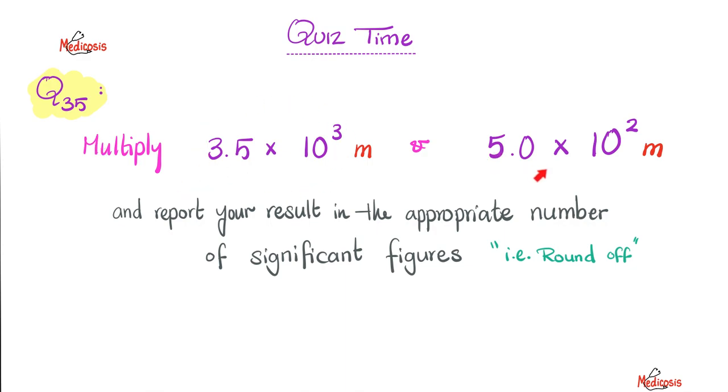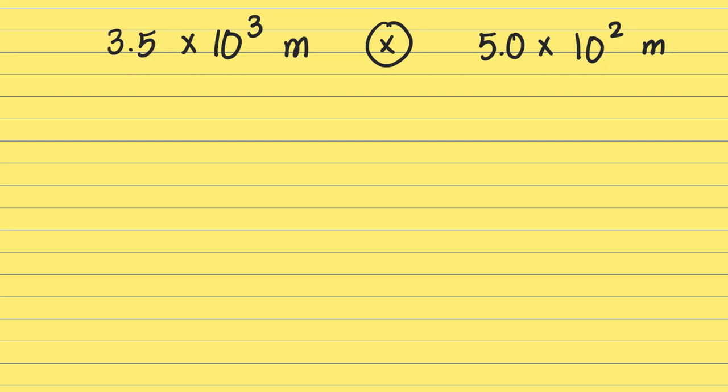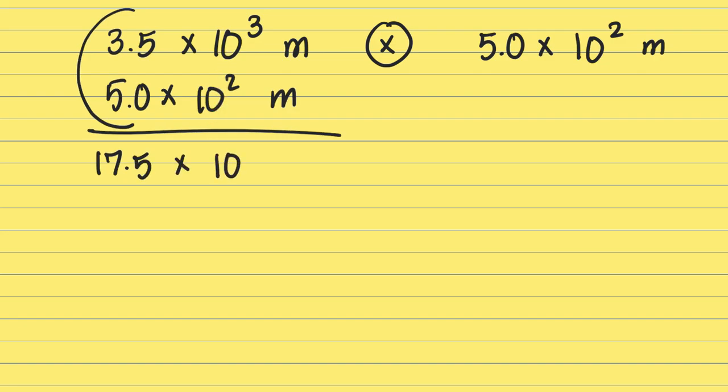The next question. Multiply 3.5 x 10^3 m and 5.0 x 10^2 m together and give me the answer in the appropriate number of significant figures. Please pause. Let's do this. You need to multiply both of these. You multiply the m value. So 3.5 times 5 gives me 17.5. The base remains 10, and then you add the exponents. 3 plus 2 is 5. When you multiply a meter by a meter, what do you get? Meter squared.